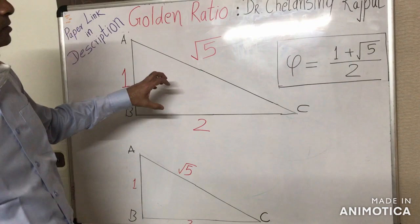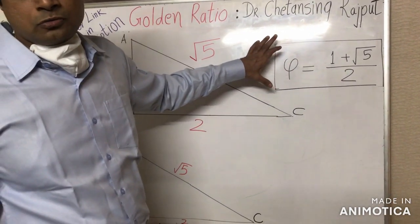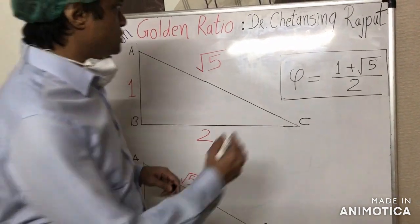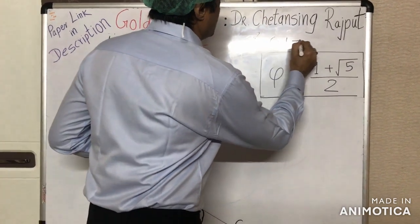These side lengths provide the exact fractional expression of golden ratio, which is nothing but the solution to the quadratic equation x squared minus x minus 1 equals 0.